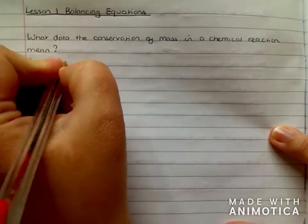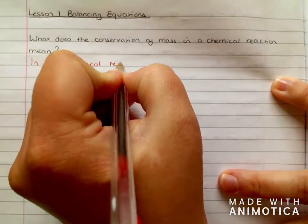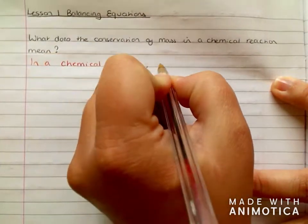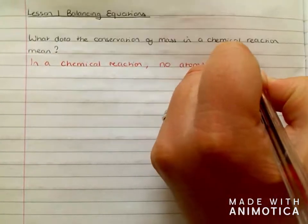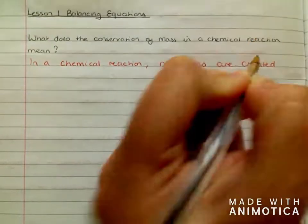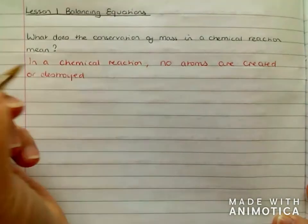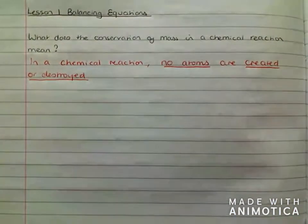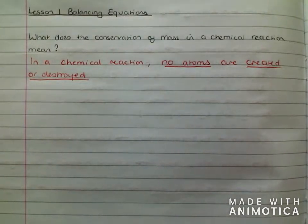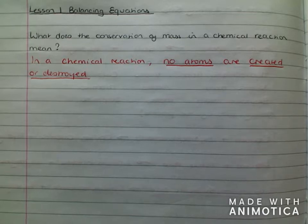So, in a chemical reaction, no atoms are created or destroyed. Essentially, everything I have before is going to be there at the end. Now, we're going to have a look today at balancing equations, which is a really good way of showing this idea of conservation of mass.